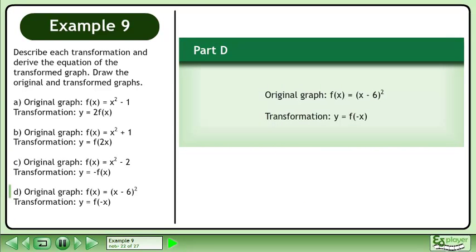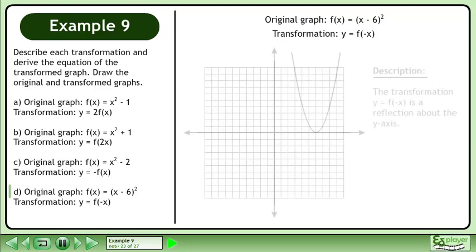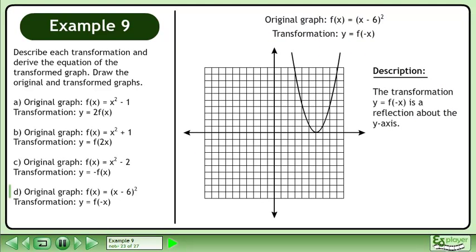In part d, the graph of f of x equals x minus 6 squared is transformed by the equation y equals f of negative x. The transformation y equals f of negative x is a reflection about the y-axis.